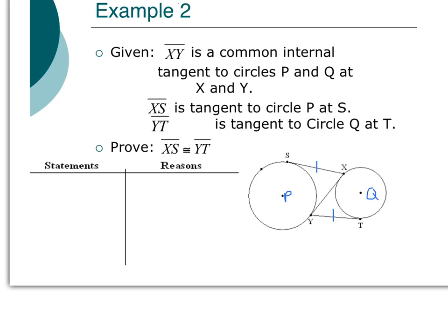If I look at my two-tangent theorem, my two-tangent theorem would say that these two are congruent. And my two-tangent theorem would also tell me that YT is congruent to XY. What do I see here? I see that XS is congruent to XY. I see that YT is congruent to XY. I'm pretty sure I could use the transitive property to prove that XS is congruent to YT.